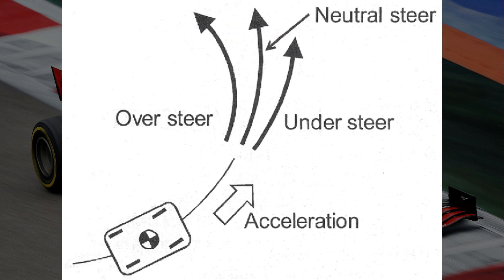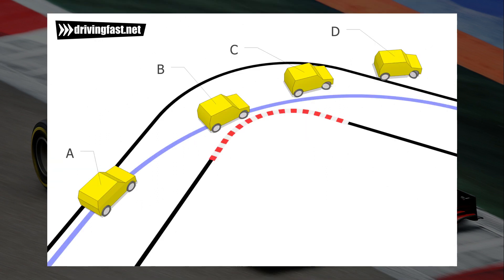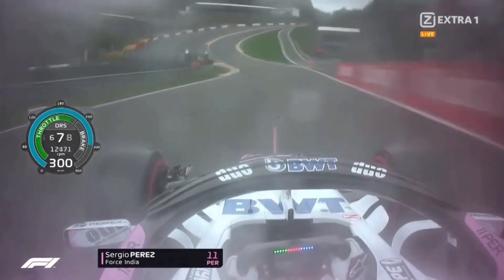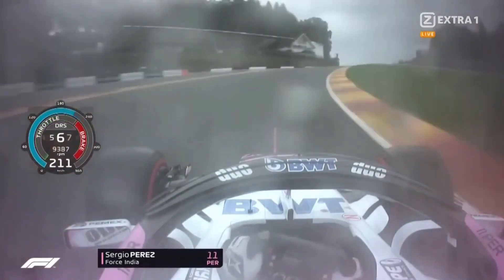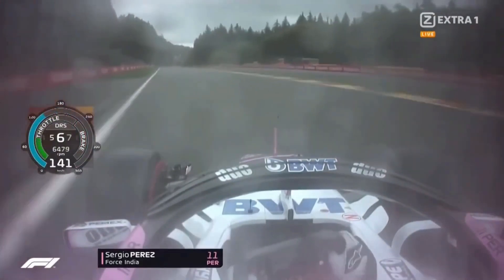Neutral steer happens when the slip angle of the front and back tires are the same. Understeer happens when the front tires have a larger slip angle than the back tires. So when a driver says he's having a lot of understeer in a particular corner, what he means is that he cannot get the front of the car to turn, and therefore the car is taking a wider angle than what is optimal.